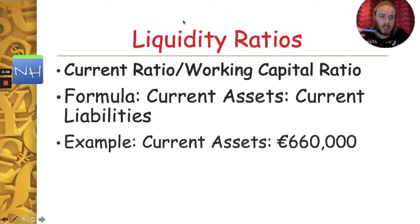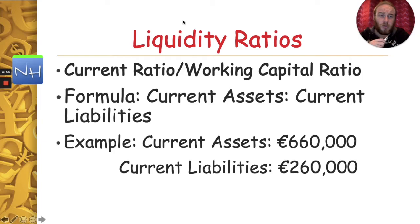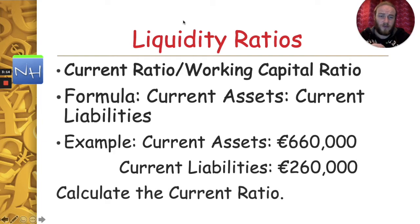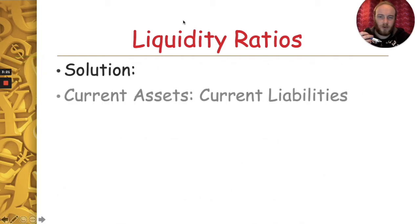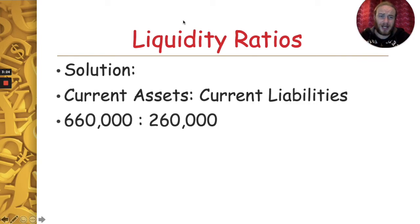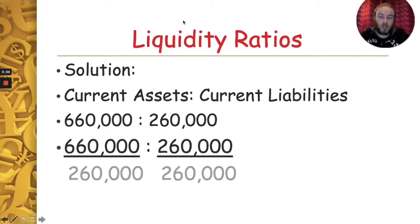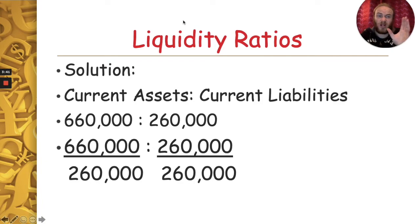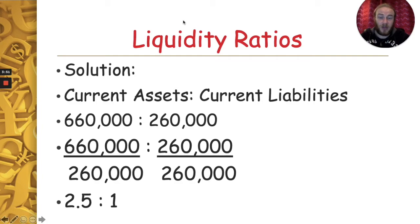So let's say in this example our current assets is $660,000 and our current liabilities is $260,000. Can you calculate the current ratio? We put these into our formula: $660,000 to $260,000. With all our liquidity ratios, the answer is expressed as something to one. So we need to turn that $260,000 into a one by dividing both sides by $260,000. Put that into your calculator and you get an answer of 2.5 to 1. And that is how you calculate the current ratio.